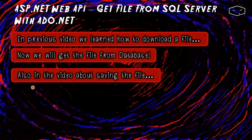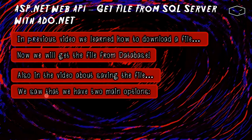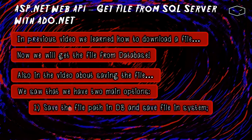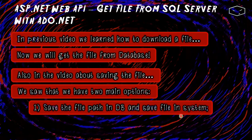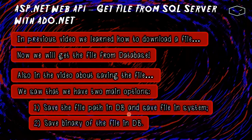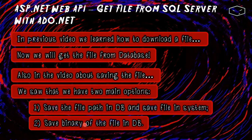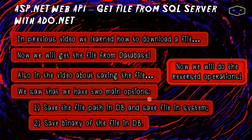In the video about saving the file, we saw that we have two main options. The first one is to save the file path in the database and then save the file in the system. The second one is saving the binary of the file in the database. Now we will do the reversed operation.